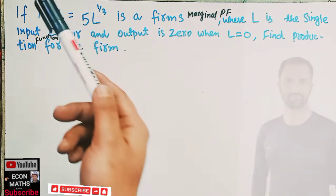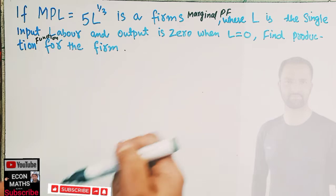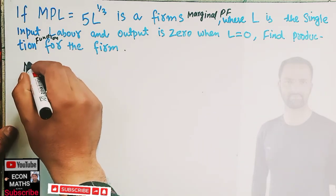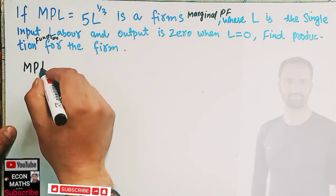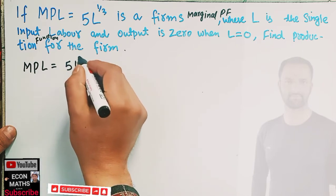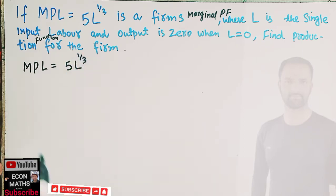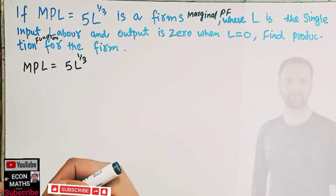We have to find the production function from the given marginal product of labor. Our MPL, that means marginal product of labor, is equal to 5L to the power 1/3. This is our marginal product of labor which is being given to us.